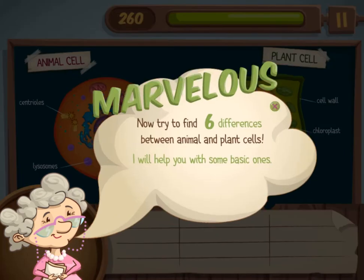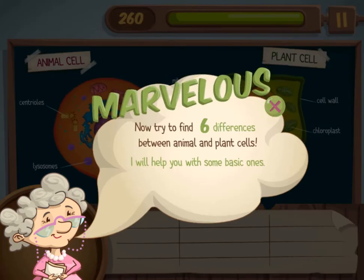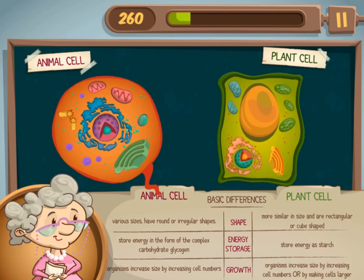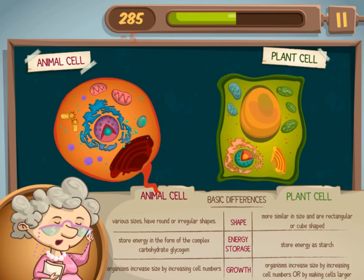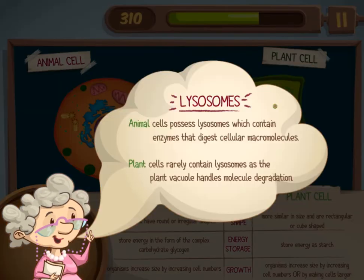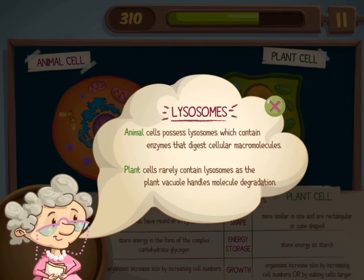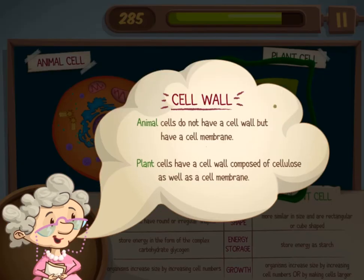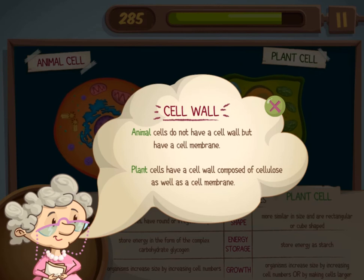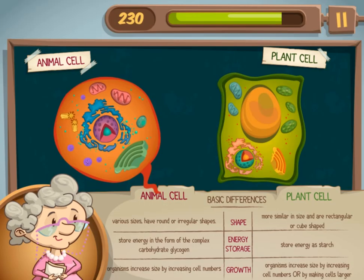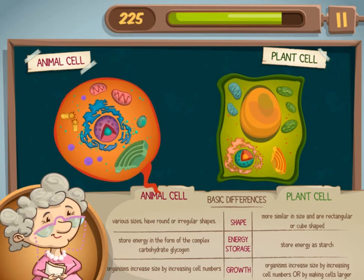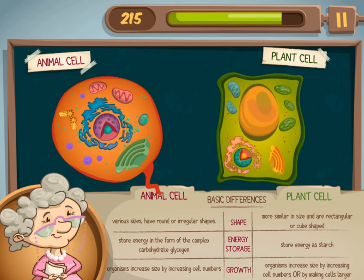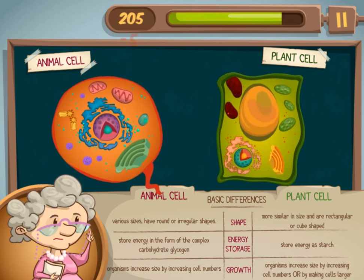Use the mouse to click and drag and drop answers and to select the differences between the cells. Learn more about science with Mrs. Daisy in this game. You will be challenged with different tasks as you progress through the game. Are you ready to accept the challenge? Do you have the right science skills to help you learn more about plant and animal cells so you can complete the game?